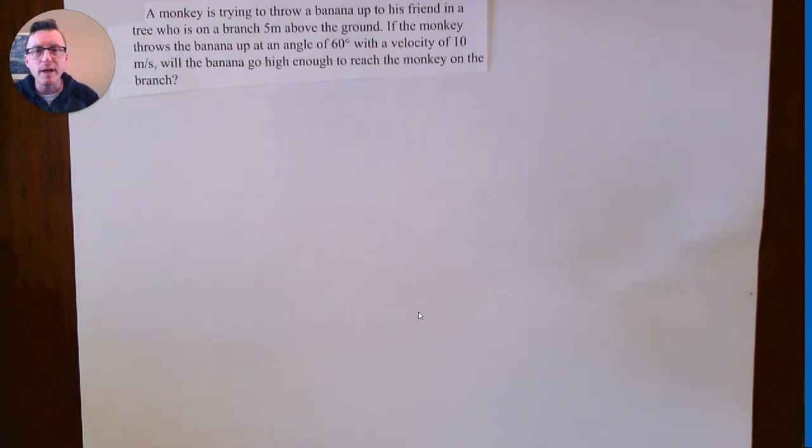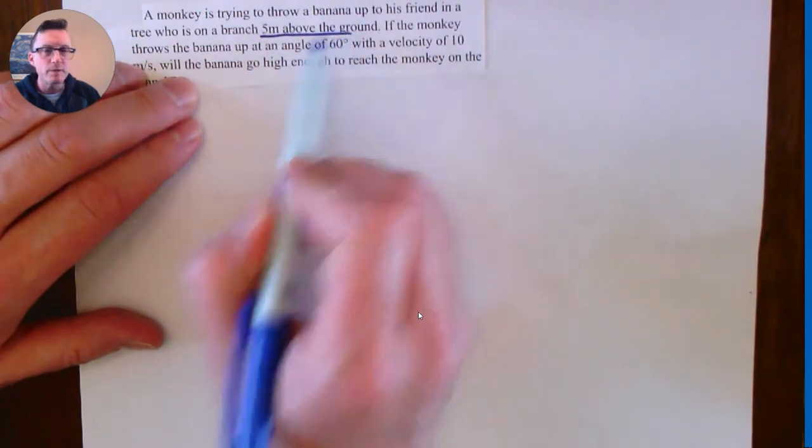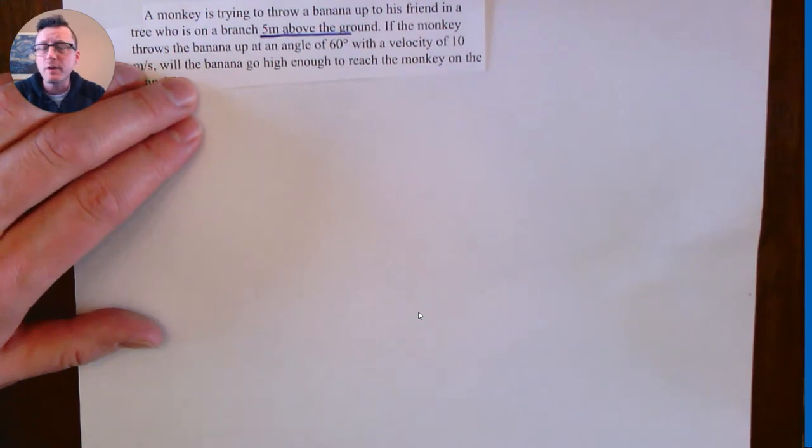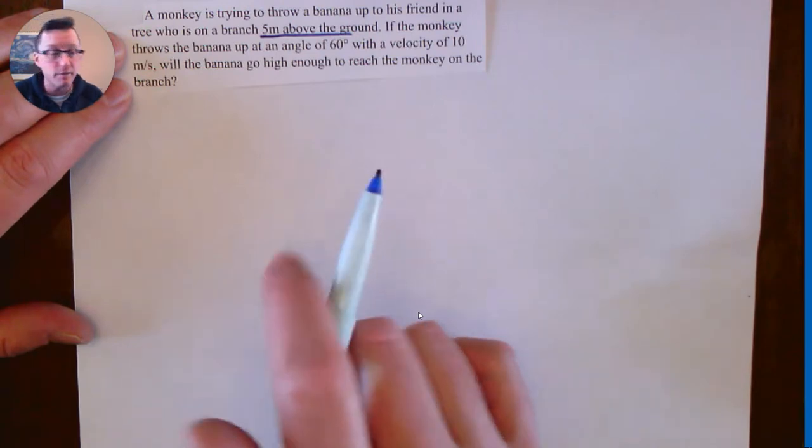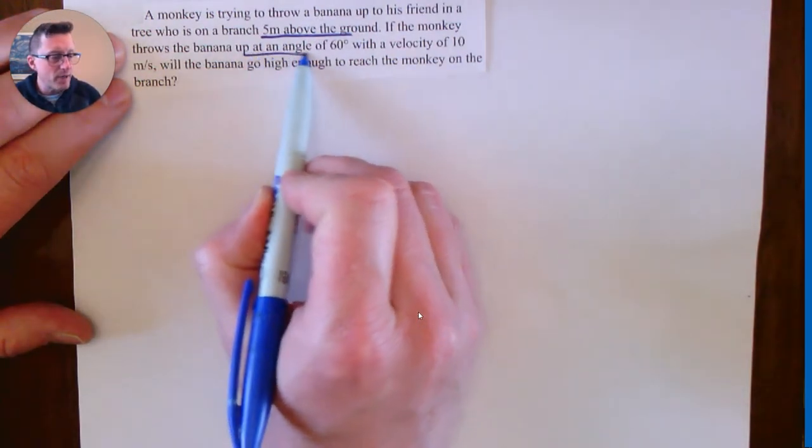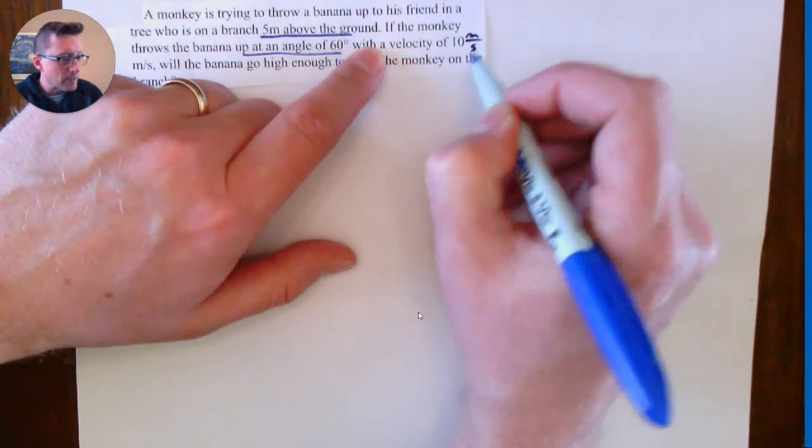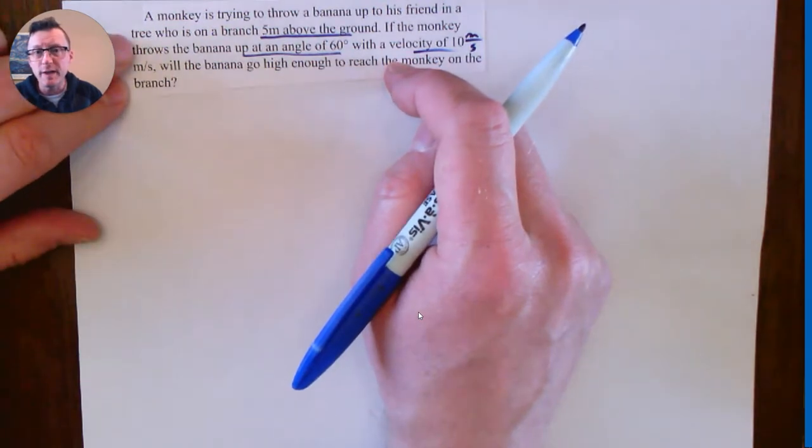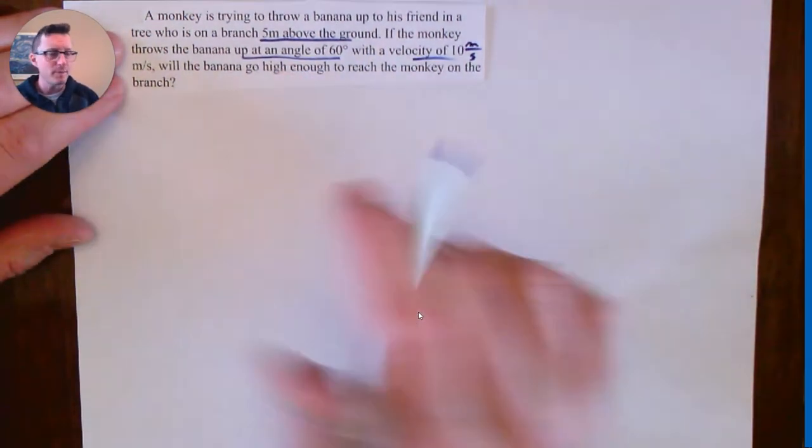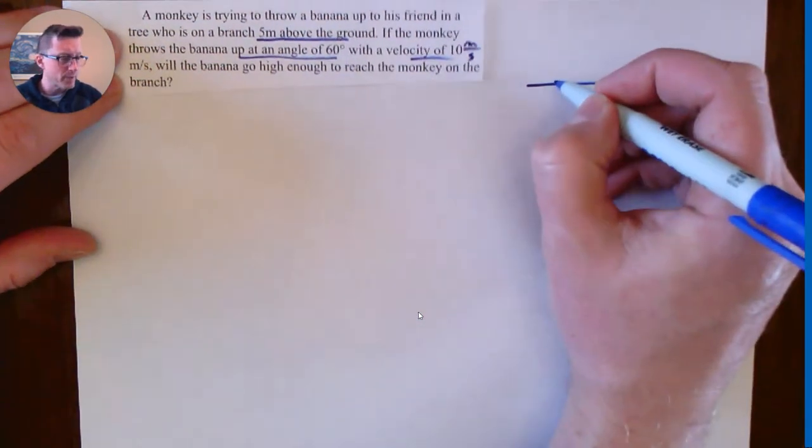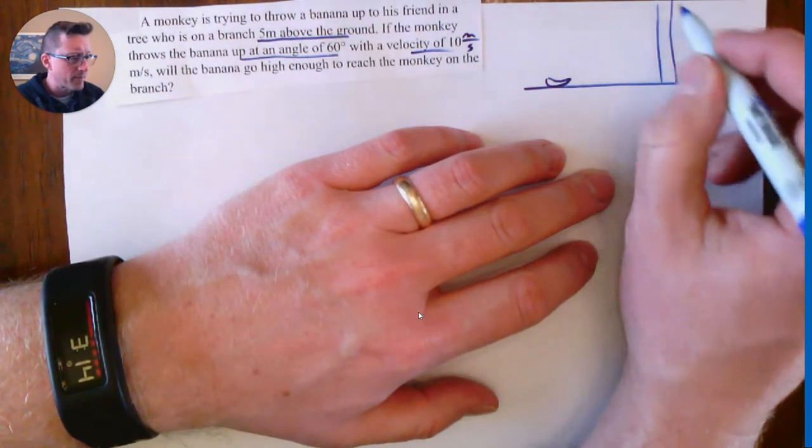So this was from one of our homework assignments. It is the question about a monkey trying to throw a banana up to his friend who is in a tree. If you read the question carefully, we see that our friend is five meters above the ground or on a branch that's five meters above the ground. We're going to assume that the banana starts on the ground. Here's our banana, friend is up in the tree, here's our branch.